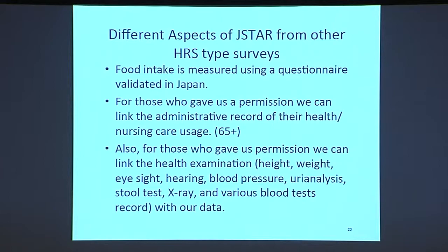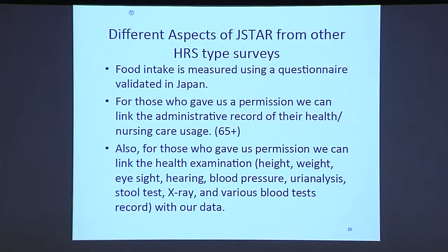There are some unique aspects of JSTAR compared to other HRS-type surveys. One is food intake, measured using a questionnaire validated in Japan. For those who gave permission, we can link administrative records of their health, nursing, and care usage directly through the municipalities. We can also link health examination records — height, weight, eyesight, hearing, blood pressure, urine analysis, stool test, x-ray, and various blood tests — with the socioeconomic, family background, and food intake data.